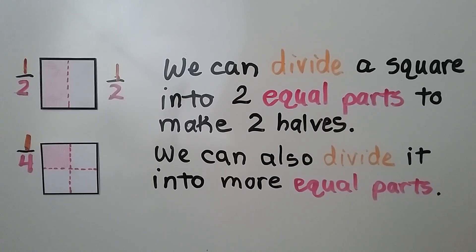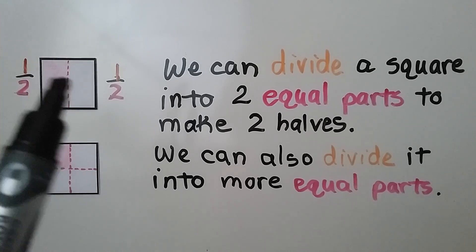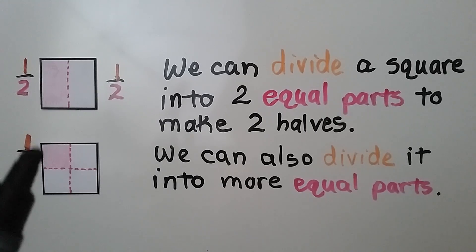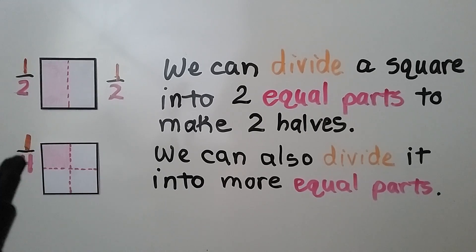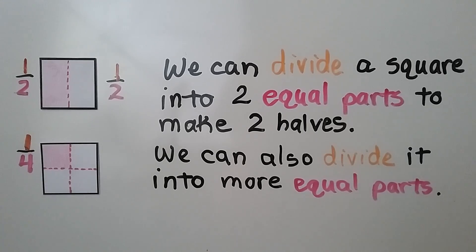We can divide a square into two equal parts to make two halves — a half and a half, that's two halves. We can also divide it into more equal parts. We can divide it into four equal parts and make a fourth, a fourth, a fourth, and a fourth.